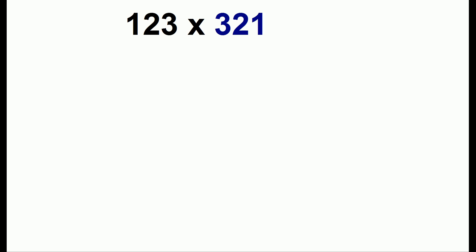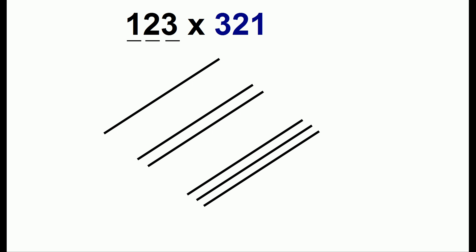We can even do this for bigger numbers. 123, we start out with one line, then with some space two lines, with some more space three lines. And we draw the other lines for the other number in the other direction.